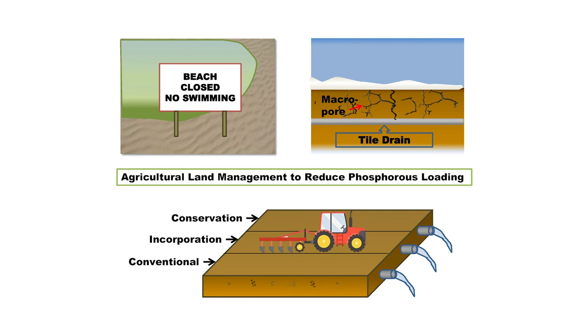To do this, I had three plots, each connected to a single tile line, as you can see from the simplified figure at the bottom of my slide. The first plot represented the conventional way of working the soil, whereas the second plot represented conservation tillage, where the soil was worked only once every three years, and the third plot represented incorporation, where the manure was worked into the soil following application. The results of this study will determine which management practice is best at reducing the total amount of phosphorus in the tiles.